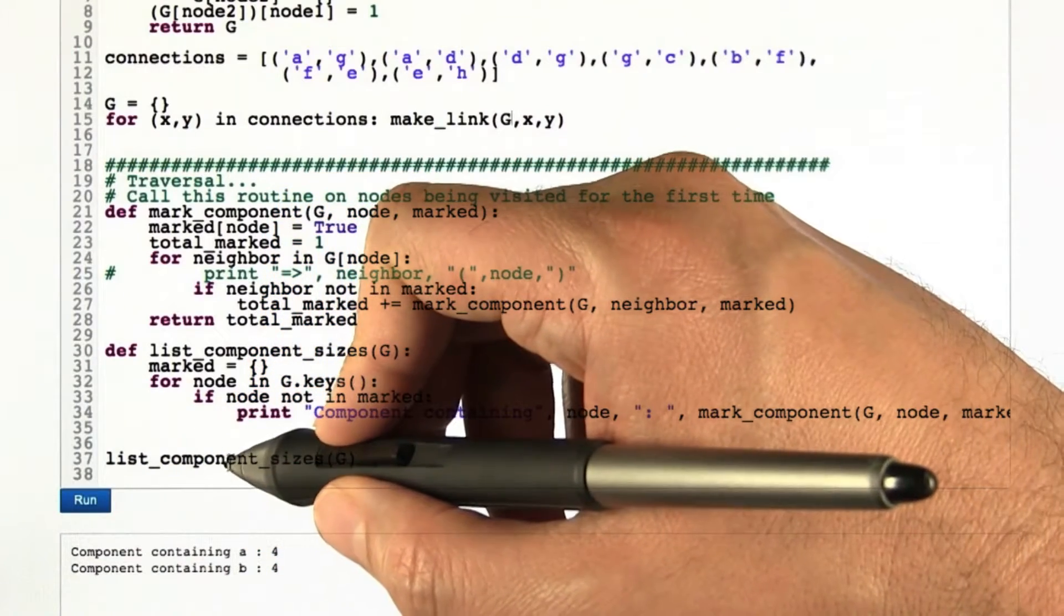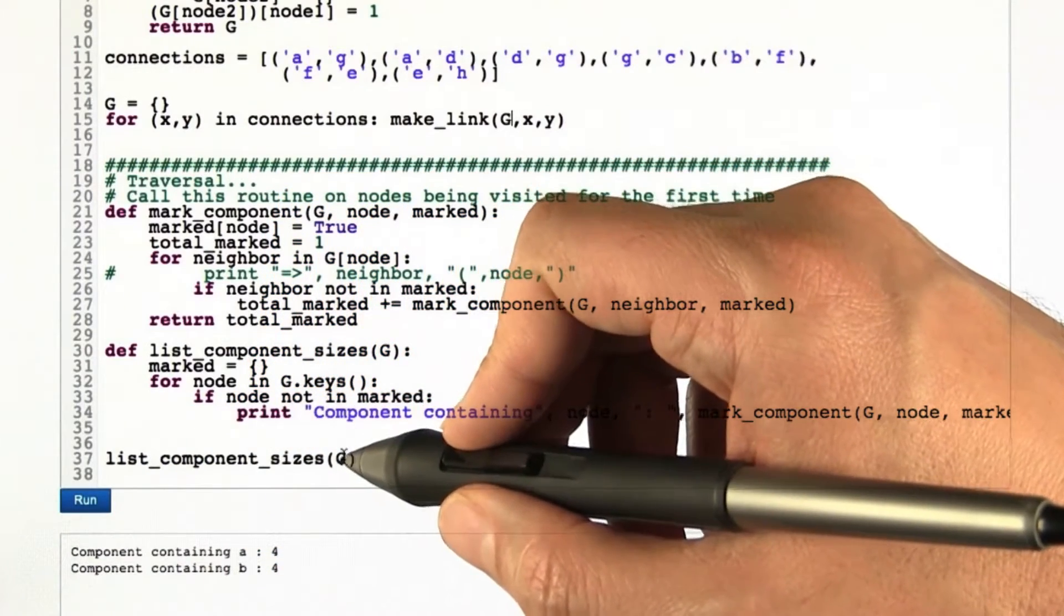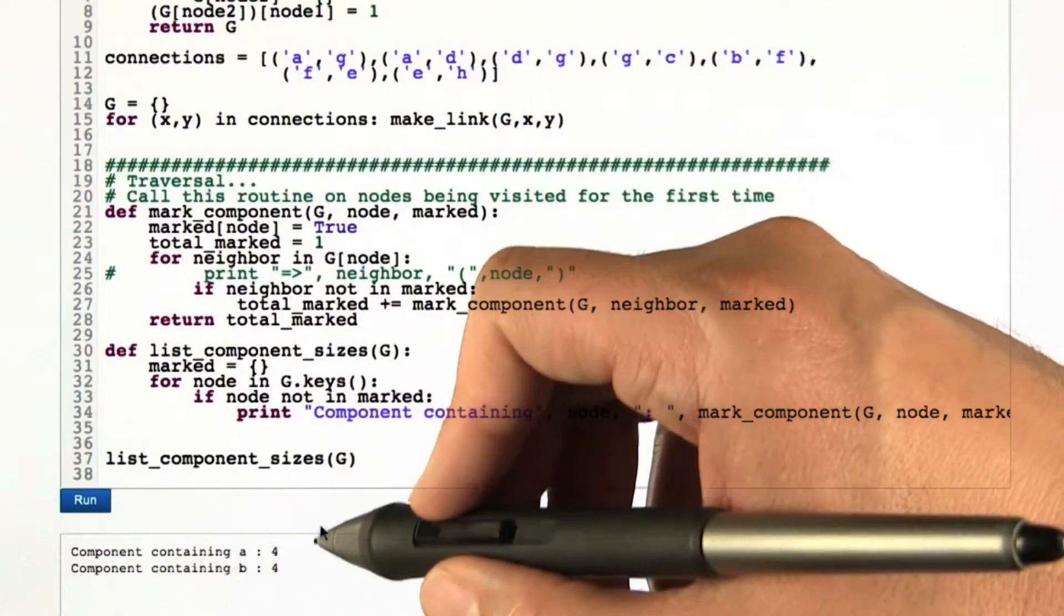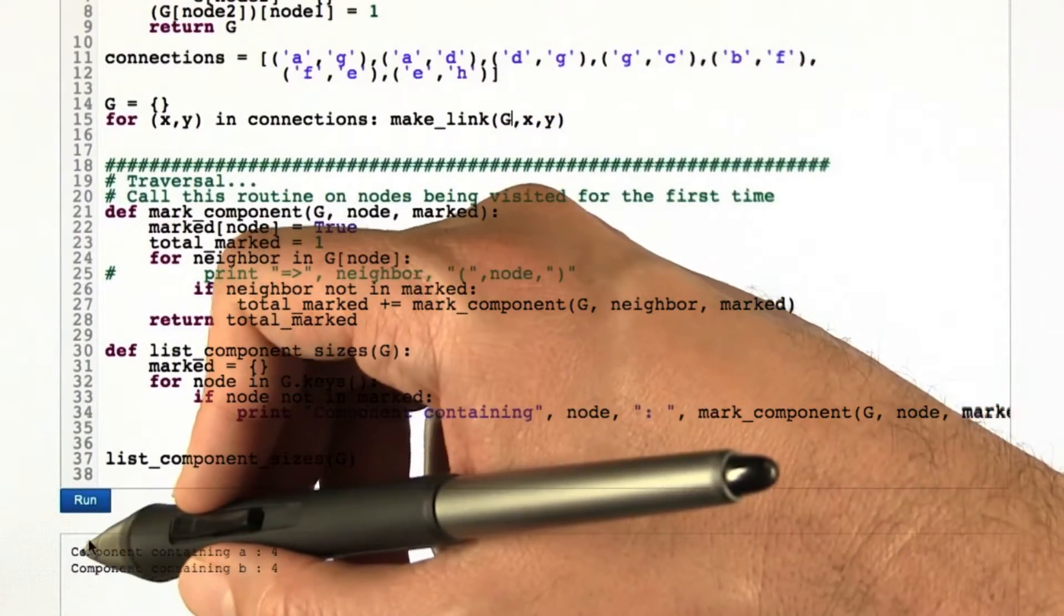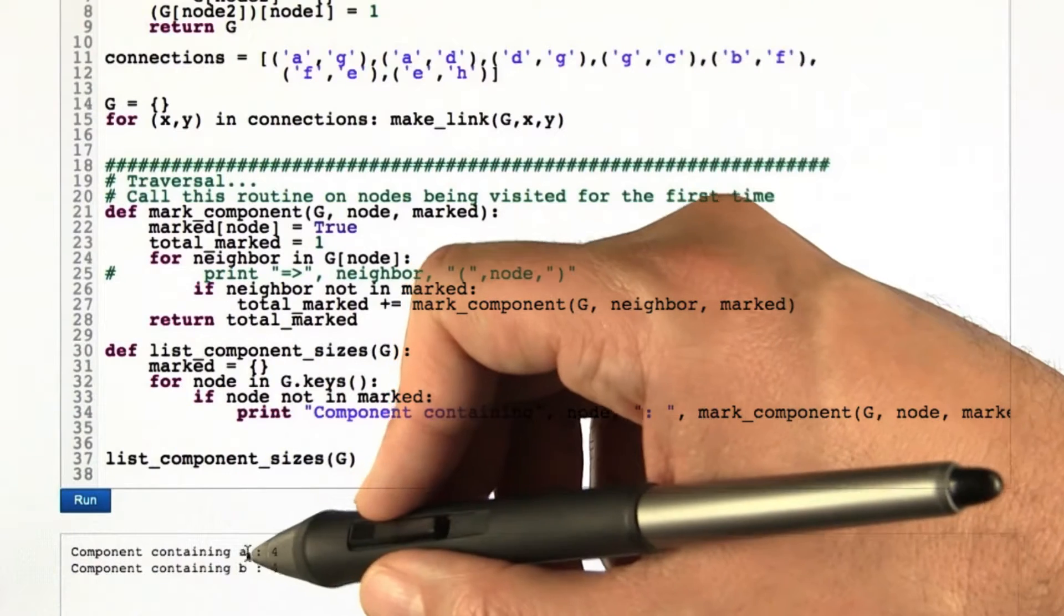Then I run a piece of code to list the component sizes for that graph G. Here's what the output looks like and then we'll go back and look at what the algorithm is. It goes through and identifies that there's two components.